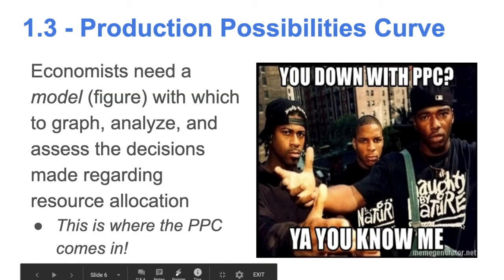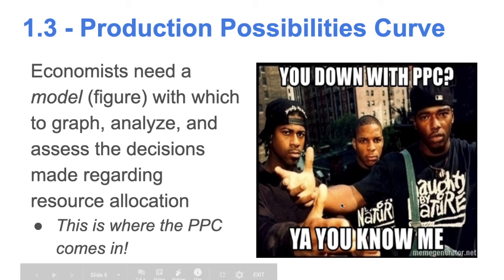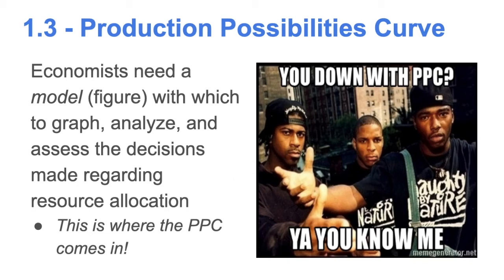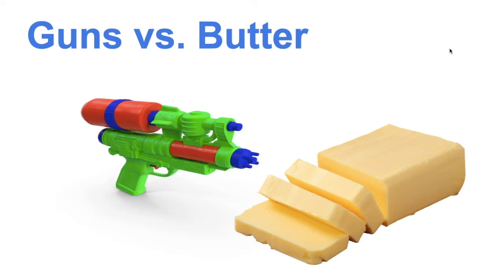Once you have your system laid out, you need a way to assess and analyze the decisions made within it. Economists, whether in a command economy or a free market economy, need some type of model — a graph with which to assess decisions about resource allocation. This is where the production possibilities curve, often referred to as the PPC, comes in. Guns versus butter is a classic example of a government making a decision between two things.